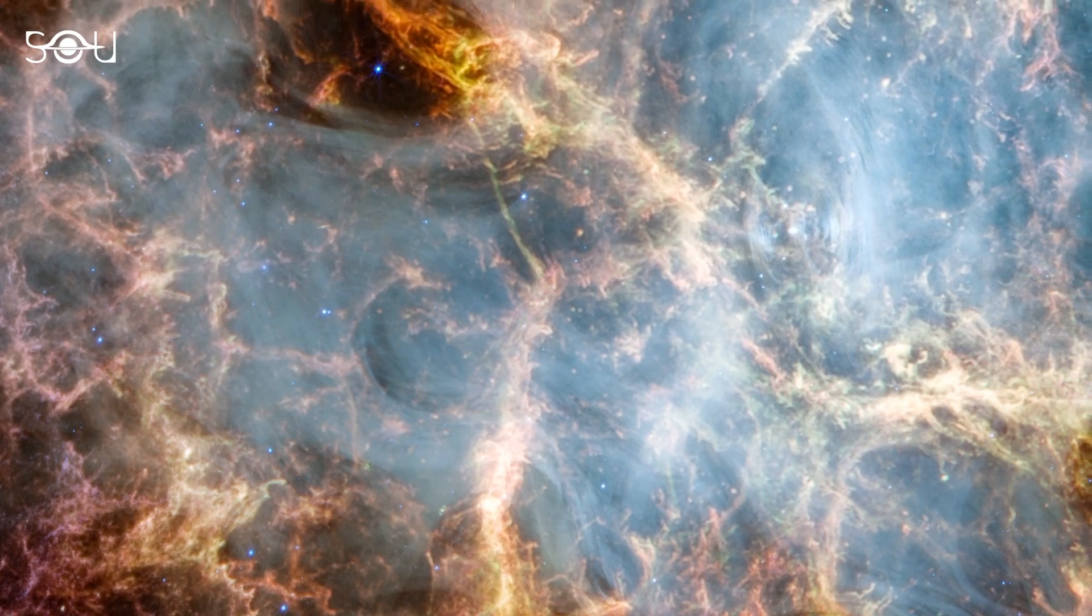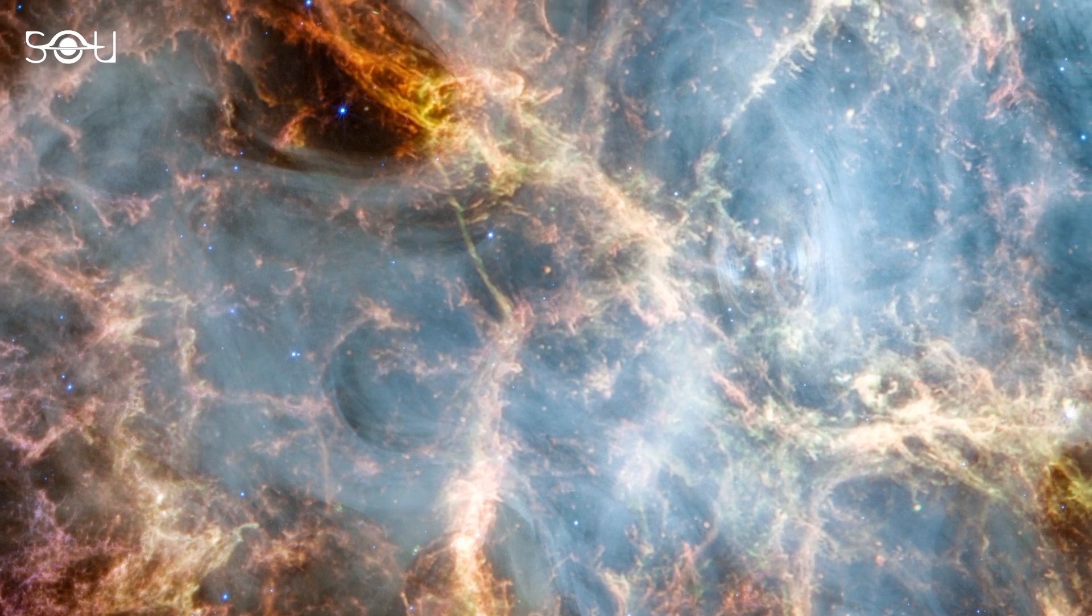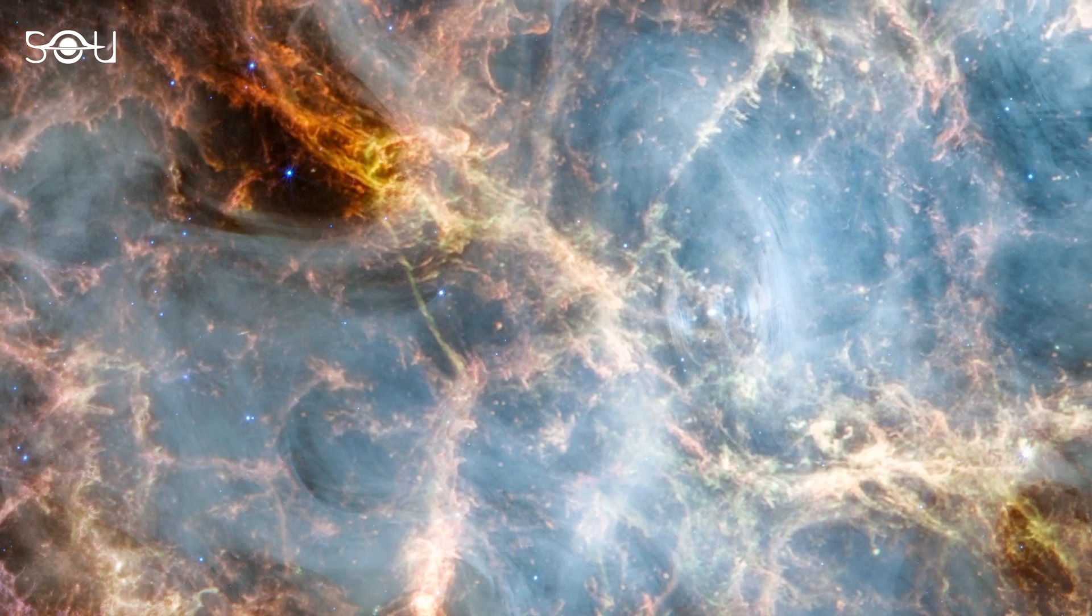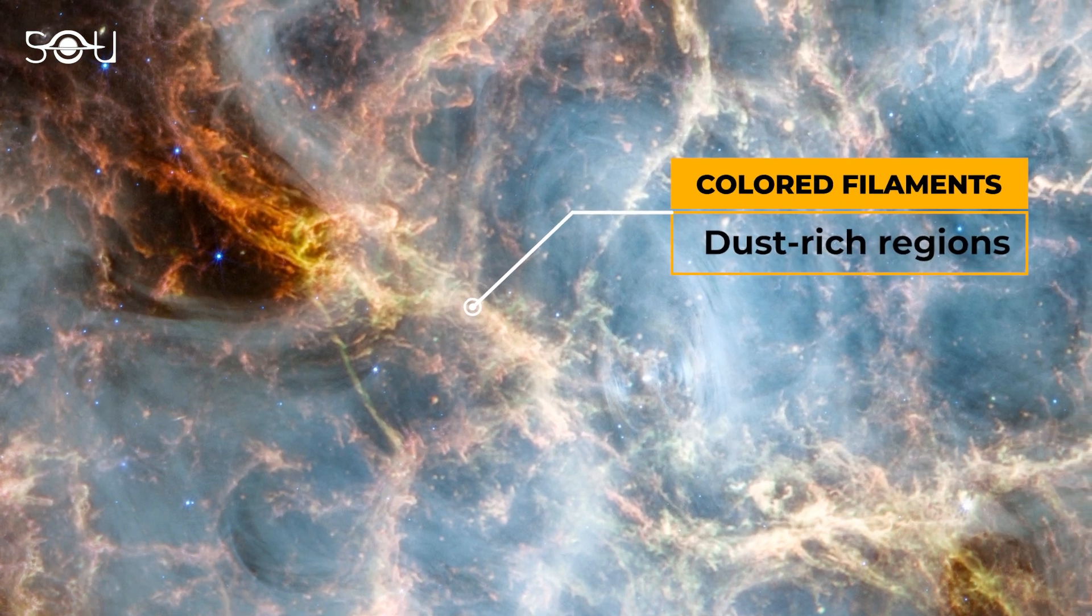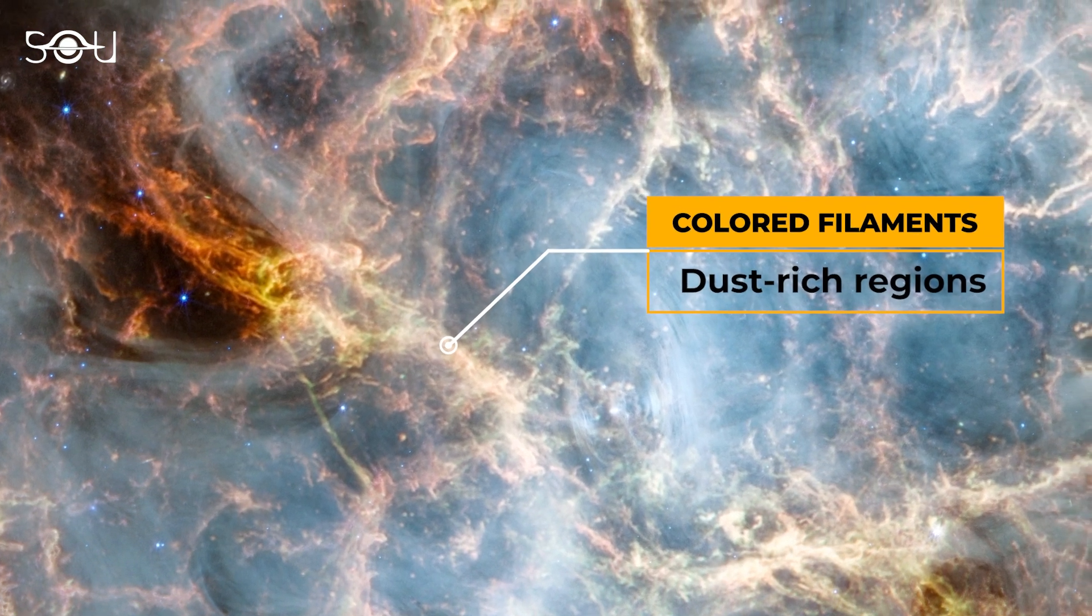The forceful pulsar wind continues to drive gas and dust outward, carving loop-like structures. These loops are decorated with yellow, white, and green filaments, indicating dust-rich areas within the nebula.